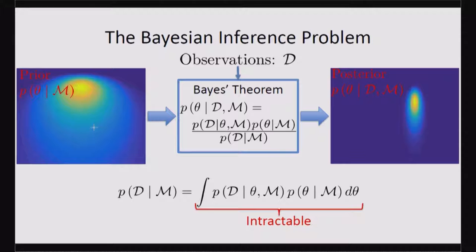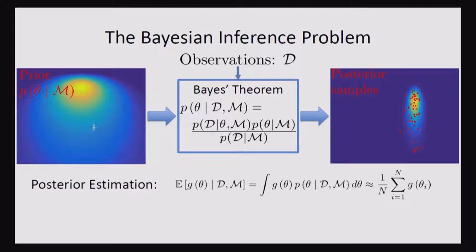And so instead, what people do is generate samples from that posterior distribution. And then we can use central limit theorem to make good estimates. So this is called robust estimation.